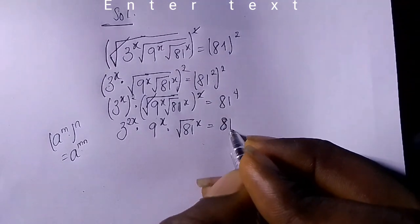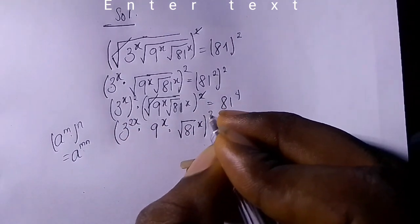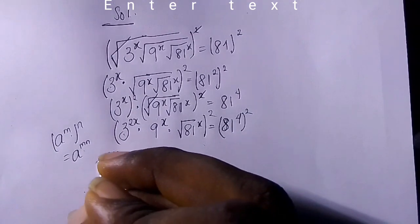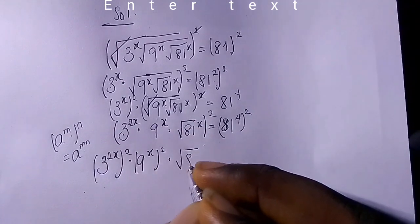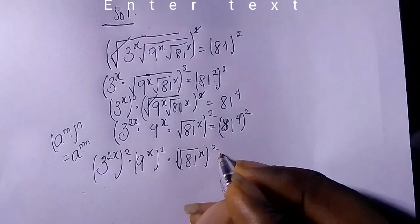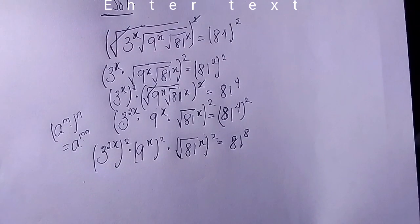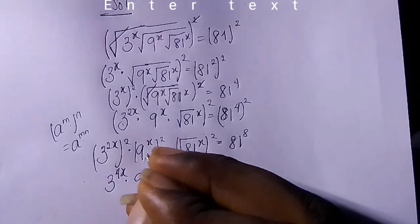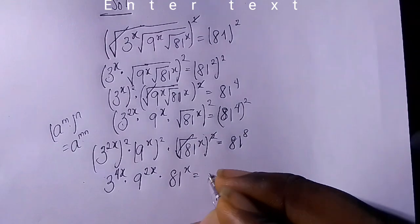Continuing to square both sides: we have 3 raised to the power of 2x, squared, multiplied by 9 raised to the power of x, squared, multiplied by root 81 raised to the power of x, squared — all in brackets — equals 81 to the power of 4 times 2, which is 81 to the power of 8. Multiplying the powers gives us 3 to the power of 4x, times 9 to the power of 2x, and squaring cancels the square root on 81, giving 81 raised to the power of x, equals 81 to the power of 8.